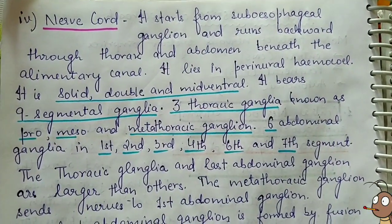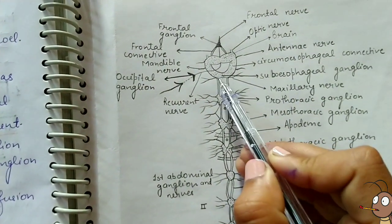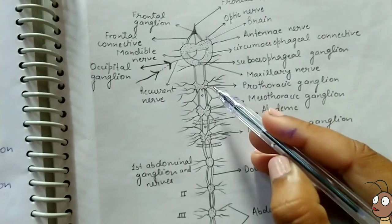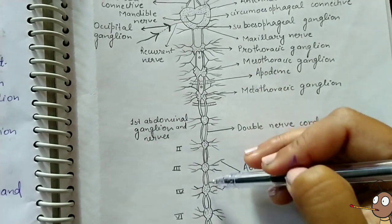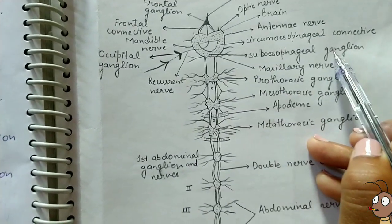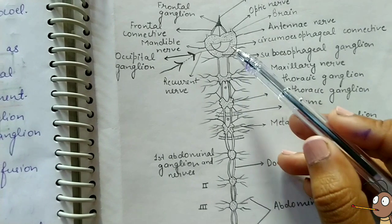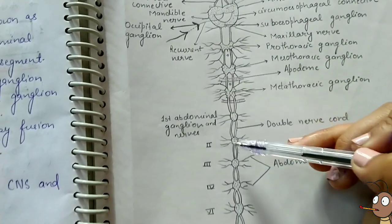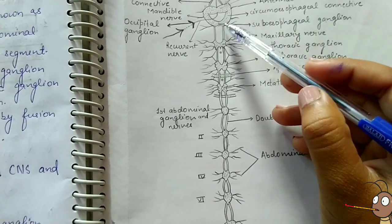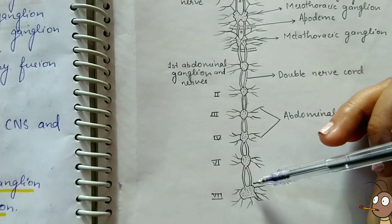Next is the nerve cord. The nerve cord starts from the subesophageal ganglion and runs backward through the thorax and abdomen, beneath the alimentary canal. Here we can see it in the diagram — this is the nerve cord running through the body.